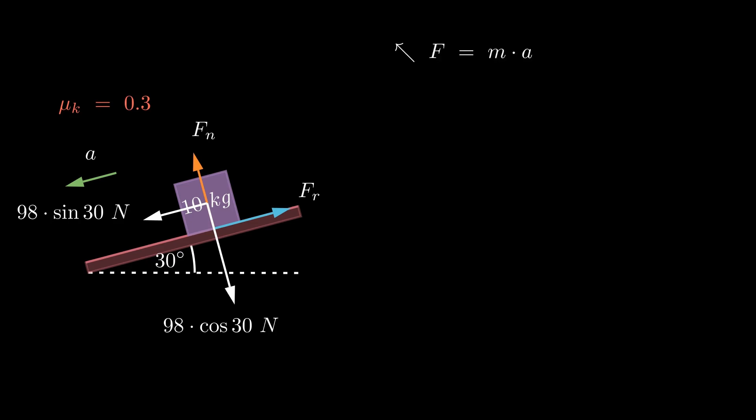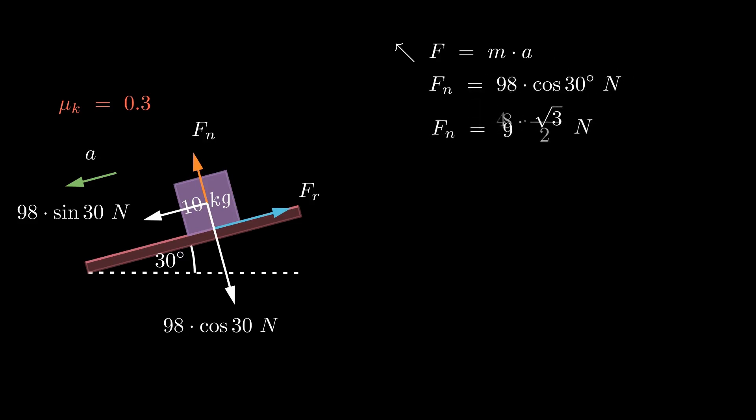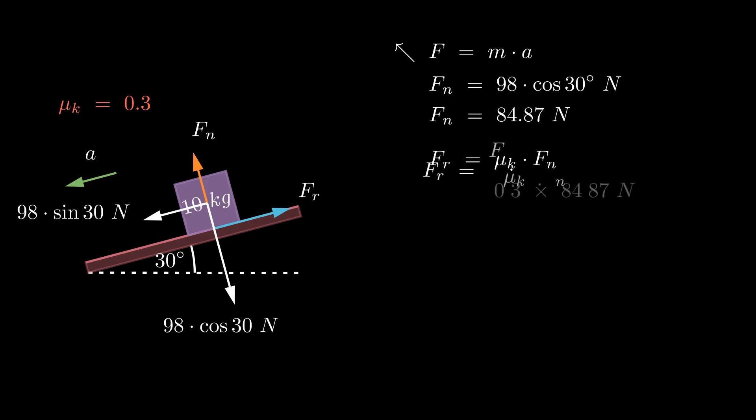The initial step is to determine the normal force, to subsequently calculate the frictional force. Once we have this information, we can use Newton's second law to find the acceleration in the direction of motion. Applying Newton's second law in the direction of the normal force — since the object doesn't move in that direction, the acceleration there is zero — we calculate the normal force, which is determined to be 84.87 N. The frictional force is calculated as the product of the normal force and the coefficient of kinetic friction, giving us a frictional force of 25.46 N.